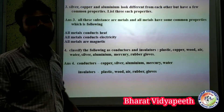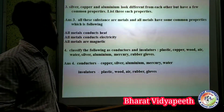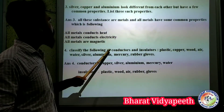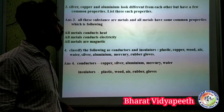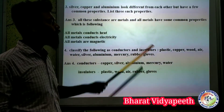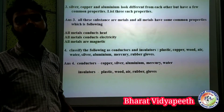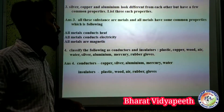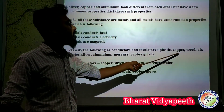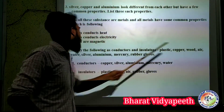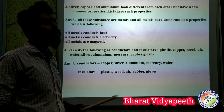These key properties are heat conduction and electrical conduction. Now, classify the following as conductors and insulators: plastic, copper, wood, air, water, aluminium, rubber, and grease.